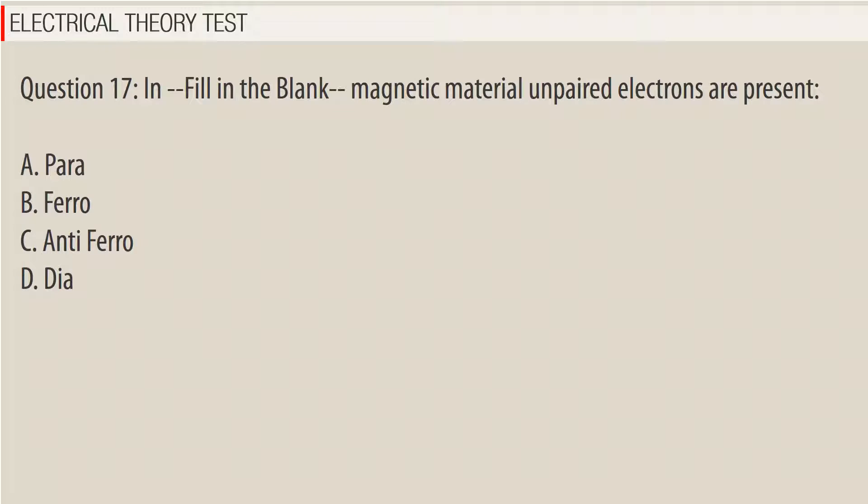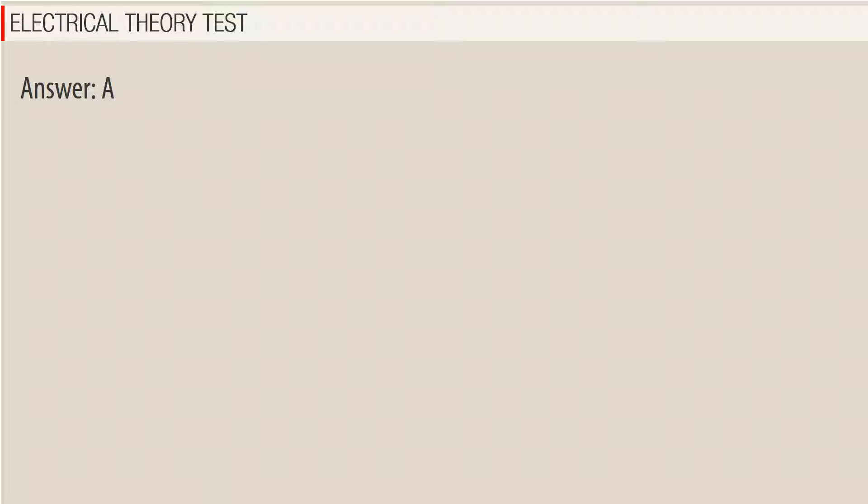Question 17. In which magnetic material are unpaired electrons present? a. Para. b. Ferro. c. Antiferro. d. Di(amagnetic). Answer: A.